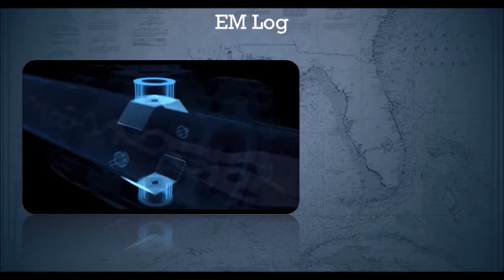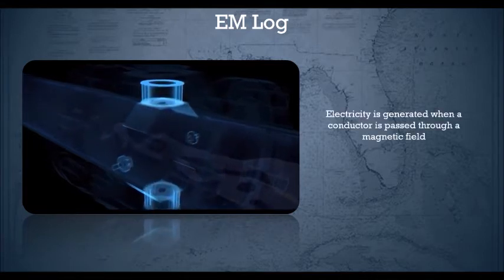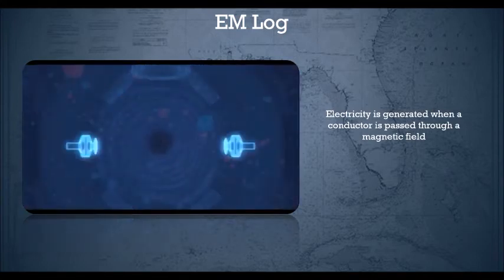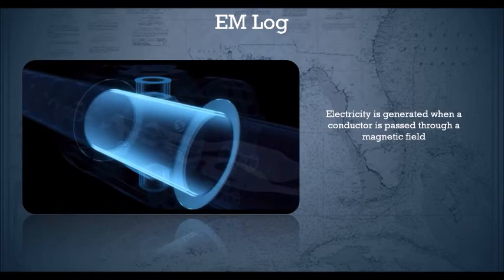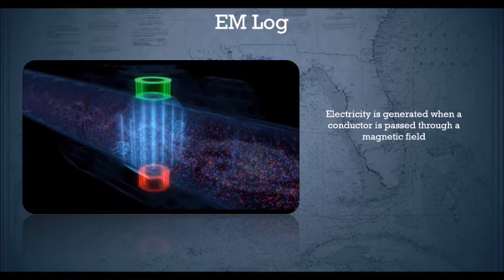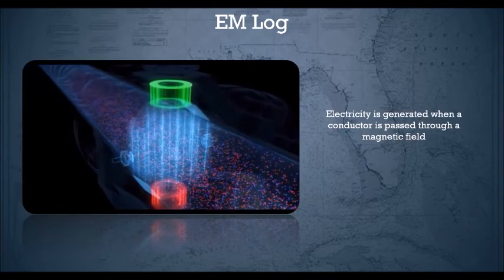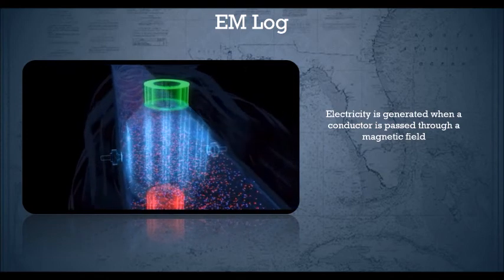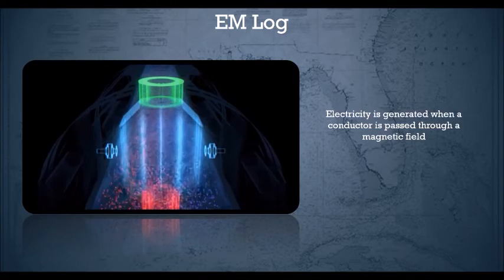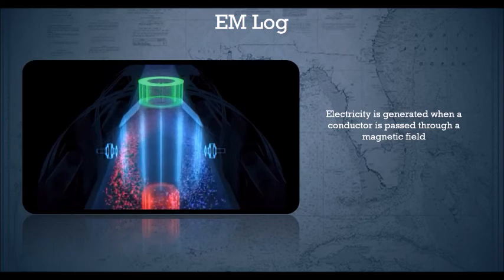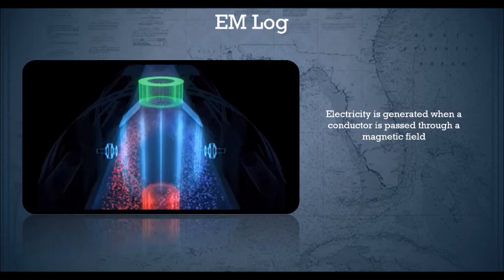You also need to understand the electromagnetic log. Basically, there is a magnetic field which is generated by a magnetic coil. There is also a pickup coil perpendicular to this magnetic field. Electromagnetic theory says that if a conductor passes through a magnetic field, electricity is generated. Now since seawater is a very good conductor of electricity, as the water passes through this magnetic field, electricity is generated and that electricity is picked up by the pickup coils and shown as speed on the bridge. The faster the water moves through the magnetic field, the more electricity is generated and the more speed is shown on the bridge.